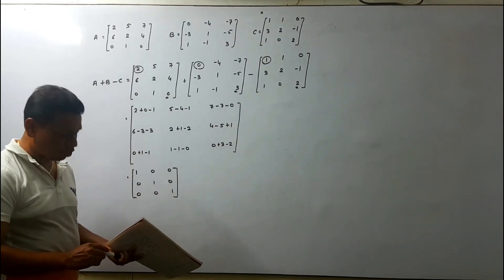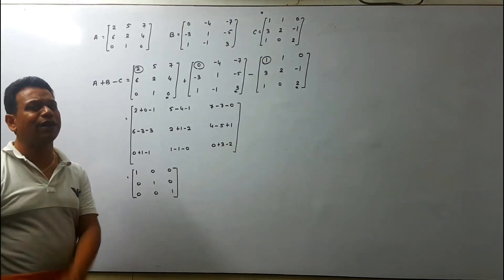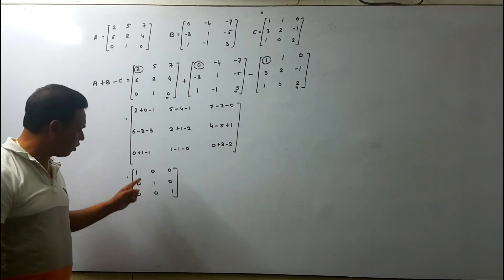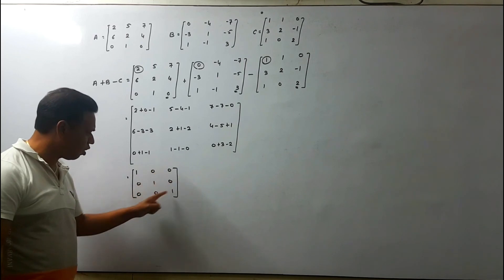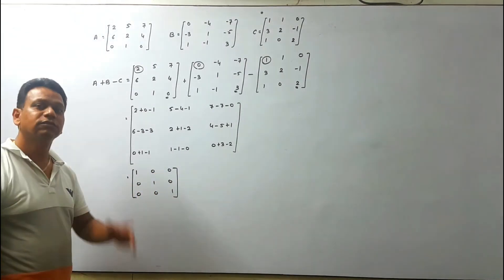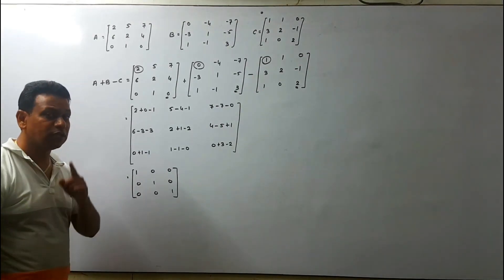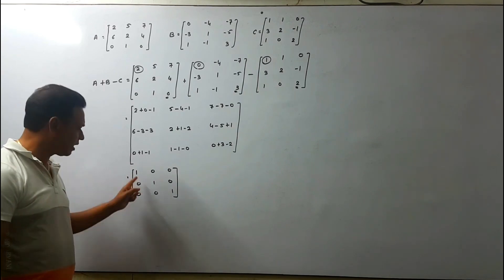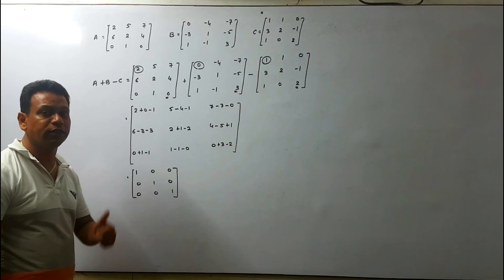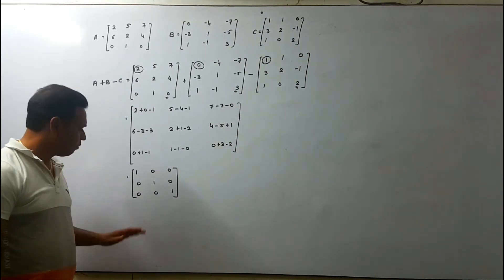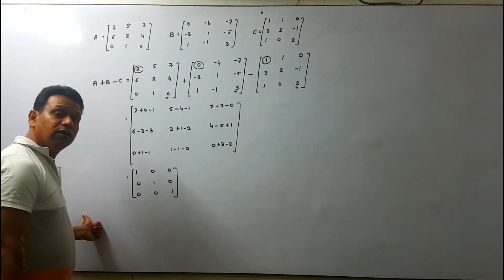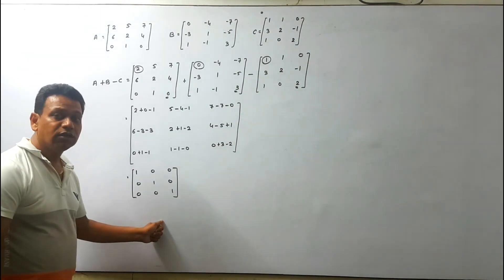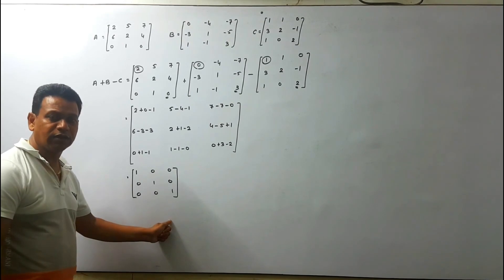Now, can you identify which matrix this is? Yes, my dear friends — it is a unit matrix or an identity matrix. Why? Because all diagonal elements are 1 and all remaining elements are 0. Remember, it must be a square matrix. A square matrix whose all diagonal elements are 1 and rest are 0 is called an identity matrix or unit matrix. Therefore, A plus B minus C is a unit matrix.